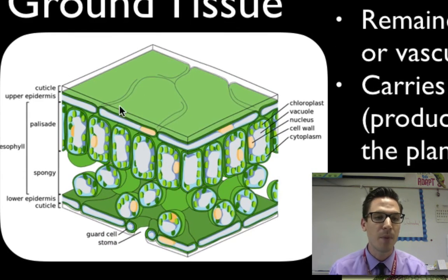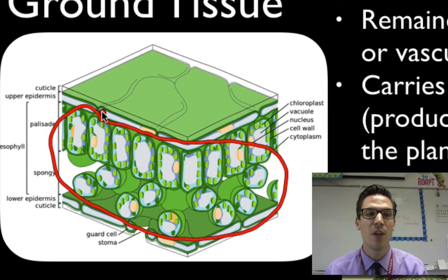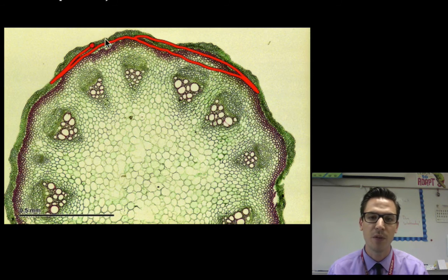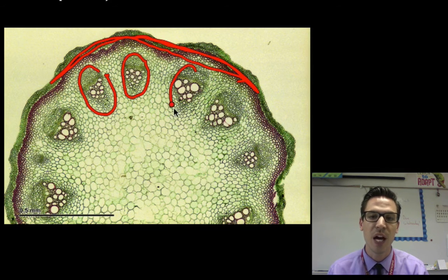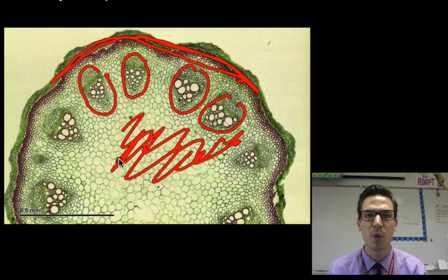In this leaf, the epidermal tissue is at the top and bottom, but the ground tissue inside is where photosynthesis takes place. Here's a picture of the inside of a stem: the epidermal layer is the protective dermal tissue, and each vascular bundle contains xylem and phloem. The rest throughout the stem is ground tissue — in the stem it provides support with thick cell walls, and in the root it's where sugars and water are stored. Ground tissue carries out the major functions of each plant part.